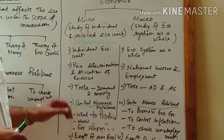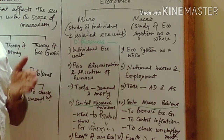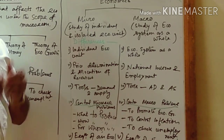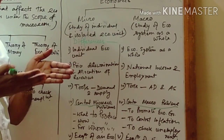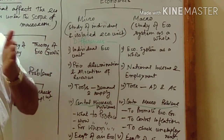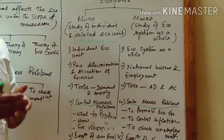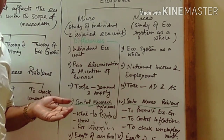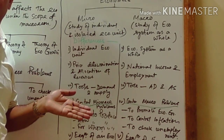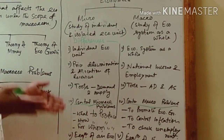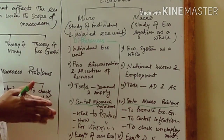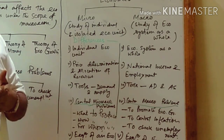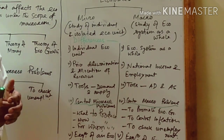The next central problem is how to produce. Should the commodities be produced by labor-intensive technique or by capital-intensive technique — that is, by using more labor and less capital, or more capital and less labor? In our country, since labor is available at a cheaper rate, we go for labor-intensive technique. But in developed countries they go for capital-intensive techniques, because capital is cheaper and available there.